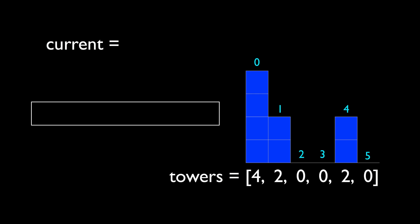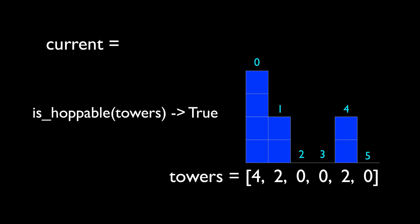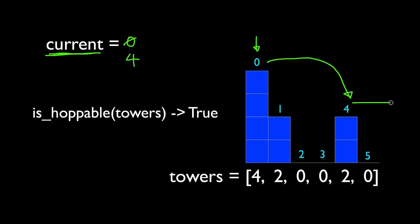Once we have next_step written, writing isHoppable is straightforward. We set a local variable called current to 0 to track our position — we always start at index 0. Then we feed current into next_step to find the next optimal step and update current. We repeat this until either current is outside the array, in which case we return true, or the current tower has height 0, in which case we're stuck and return false.